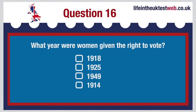What year were women given the right to vote? 1918, 1925, 1949 or 1914? The correct answer is: In 1918, women over the age of 30 were given voting rights and the right to stand for Parliament, partly in recognition of the contribution women made to the war effort during the First World War.